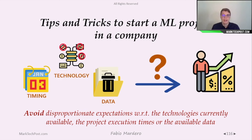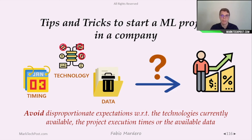The last tip is to avoid disproportionate expectations with respect to the technologies currently available, the project execution times, or the available data. For example, if your company's data is nearly trash — full of errors and missing values — don't expect to develop a successful, large machine learning project. You don't have the amount or quality of data needed to perform the task. Also, don't expect to develop a machine learning project in a short time, and the technology currently available may not be enough to solve the task you wanted to.